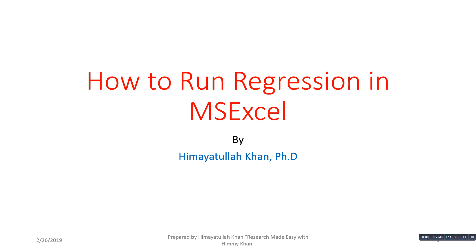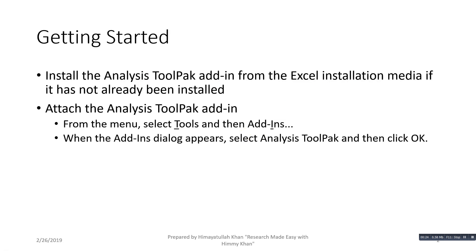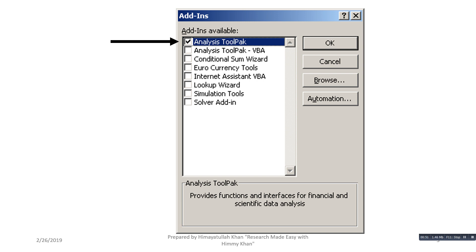In this video I will discuss how to run regression in MS Excel. First, you have to install the Analysis ToolPak add-in from the Excel installation media if it has not already been installed. To attach it, from the menu select Tools, then Add-ins. When the Add-ins dialog appears, select Analysis ToolPak and click OK.